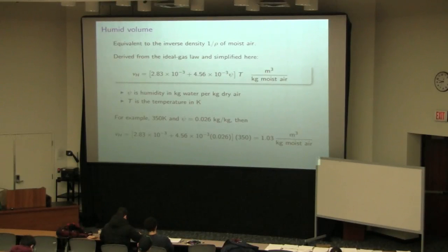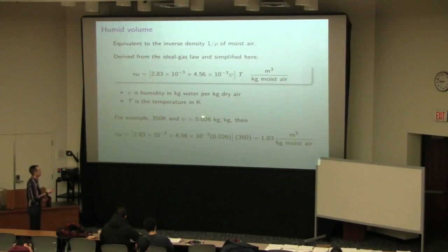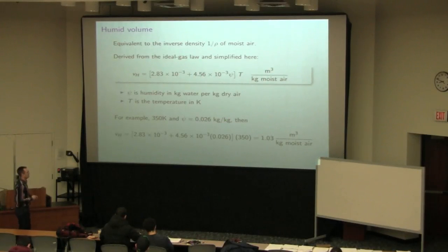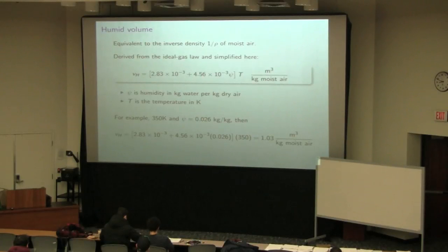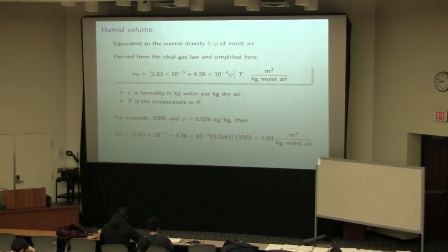Note that temperature in the V_h formula must be in Kelvin. As a small example: air at 0.026 kg water per kg dry air and 350 K gives V_h equal to 1.03 m³ per kg moist air, and the inverse gives a density of roughly 1 kg/m³ — close to the density of dry air, as expected, since we only have 26 g of water per kg of air.